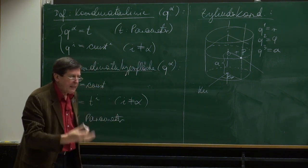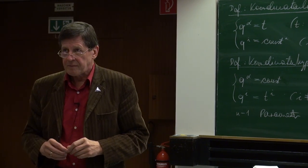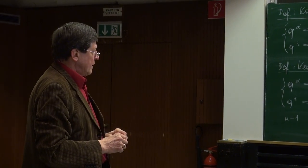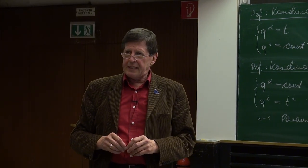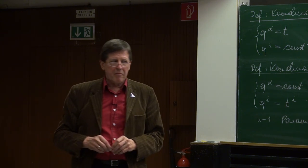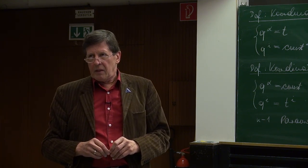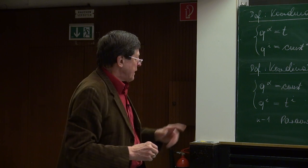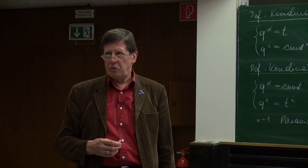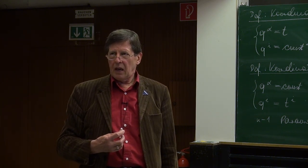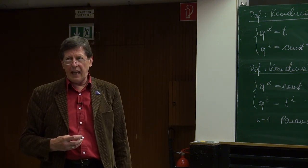Jetzt können Sie sich gut vorstellen, was ich mit Koordinatenlinien und Koordinatenflächen meine. Man wählt im Allgemeinen für R nur Werte größer gleich 0. Wenn man in die andere Richtung will, wählt man den Winkel Phi gleich Pi. So macht man es üblicherweise sowohl bei Zylinder- als auch bei Kugelkoordinaten, damit man keine Doppelbezeichnungen für einen Punkt hat.